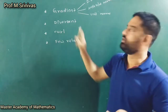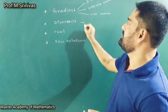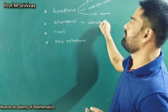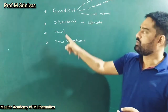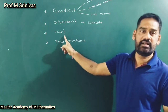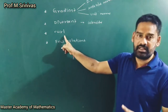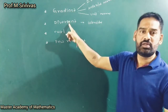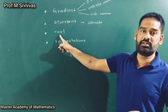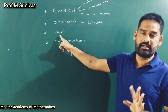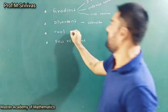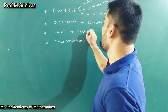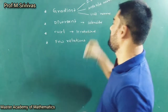In divergence, one important concept to expect is solenoidal. Coming to curl — this is associated with a continuous differentiable vector point function. Gradient and divergence both use the dot product, whereas curl uses the cross product. Based on curl, one important concept is irrotational — this is an important aspect in the curl definition.